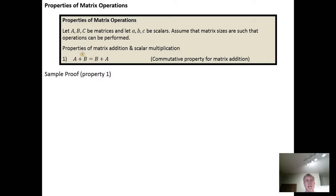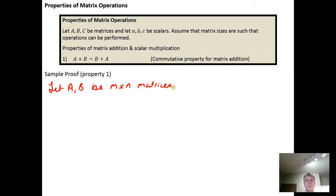We need to start by creating those two matrices. We'll say: let A and B be M by N matrices. The reason for having them be M by N is so they will have the same size, because we can't add two matrices if their dimensions differ — so we're constructing two matrices that are addable. Then we'll give a name to the sum A plus B and a name to the sum B plus A.